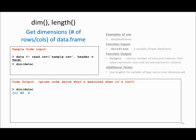If you want to find out the dimension or the length of your data frame, you can use a function called dim or length. So in this example you are reading an external file called sample.csv using read.csv and the data is loaded into a variable called data. When you call dim on your variable name it gives you the dimension of your data — in this case 40 and 2, where the first number represents the number of rows and the second number shows the number of columns.